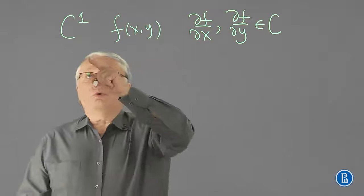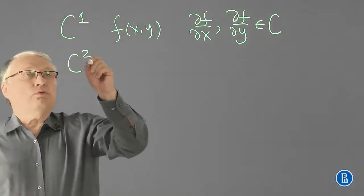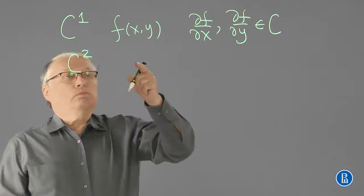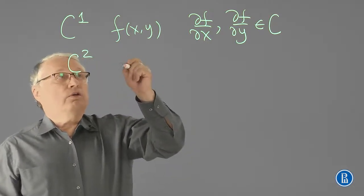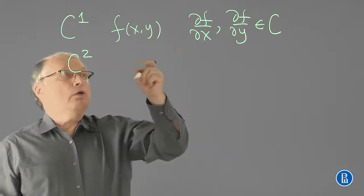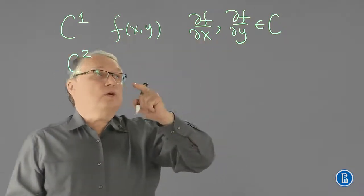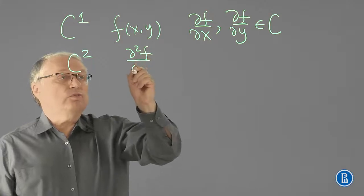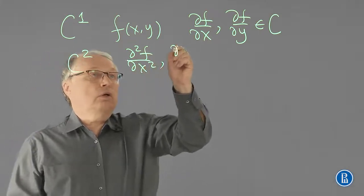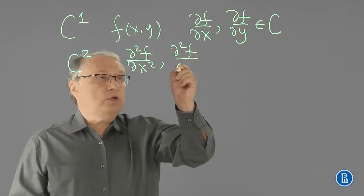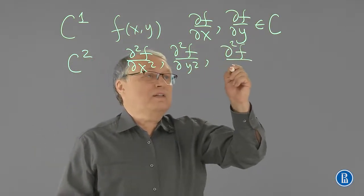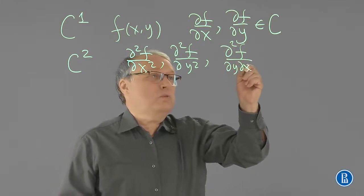Now, we can also introduce C2 class of functions. This time, we say that given a function f whose first derivatives are continuous, and moreover, all second-order derivatives are also continuous, and according to Young's theorem, then the cross-derivatives are the same.